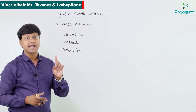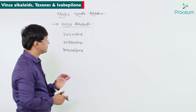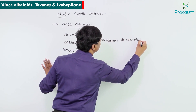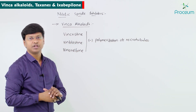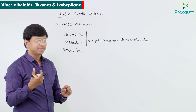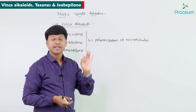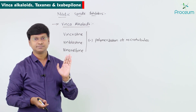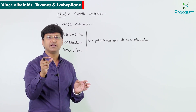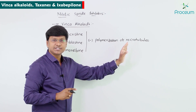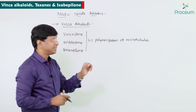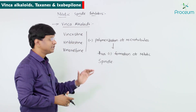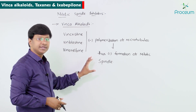The mechanism of action of vinca alkaloids: they act by inhibiting the polymerization of the microtubules. The purpose of microtubule polymerization in cell division is for the formation of the mitotic spindle. So by inhibiting polymerization, these drugs inhibit the formation of the mitotic spindle.